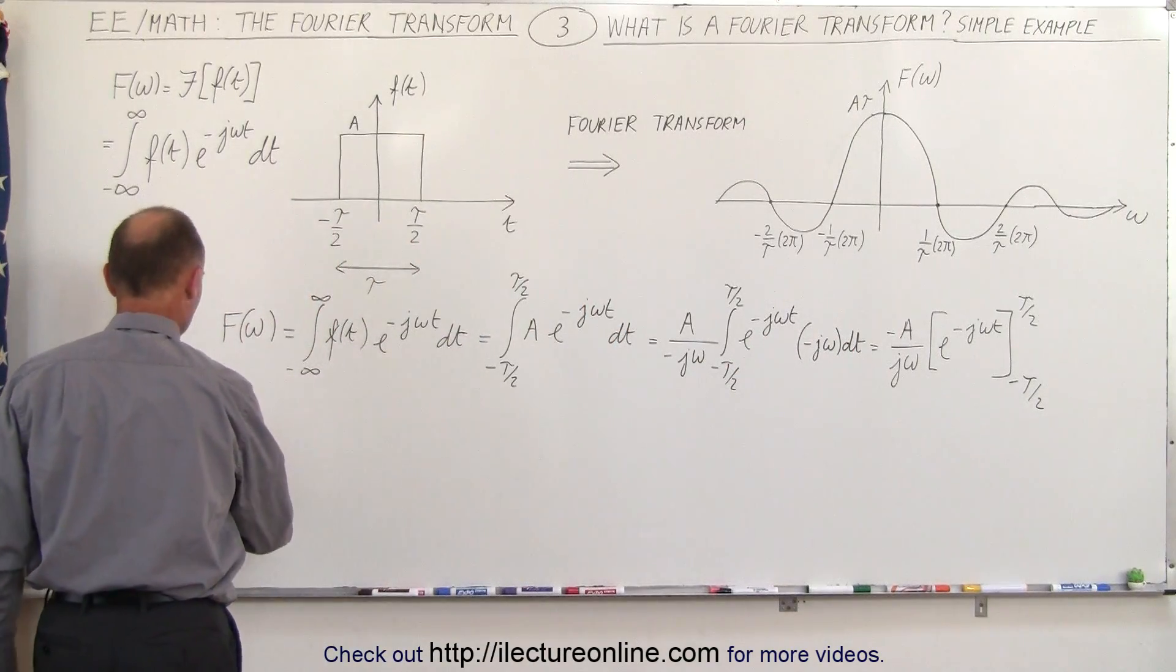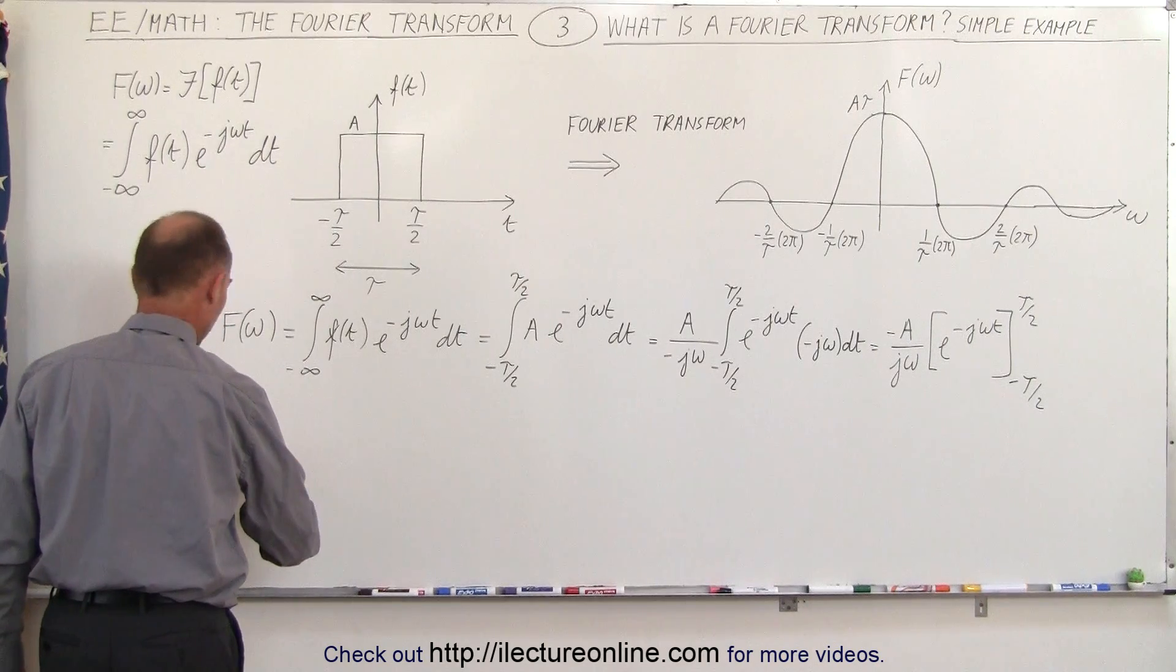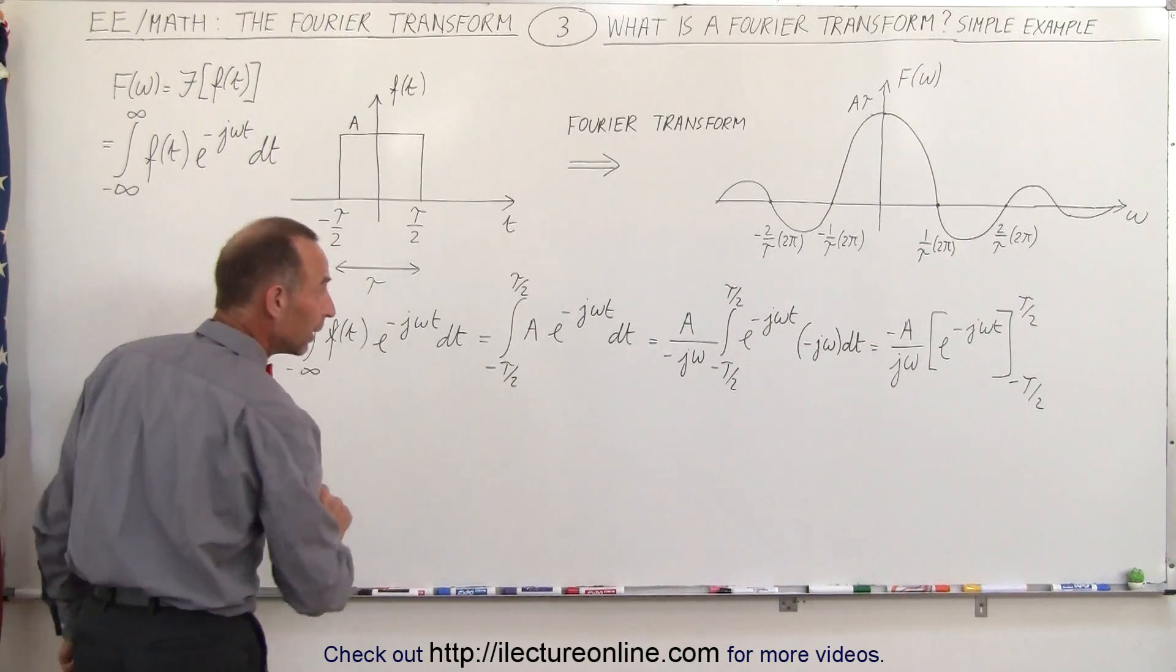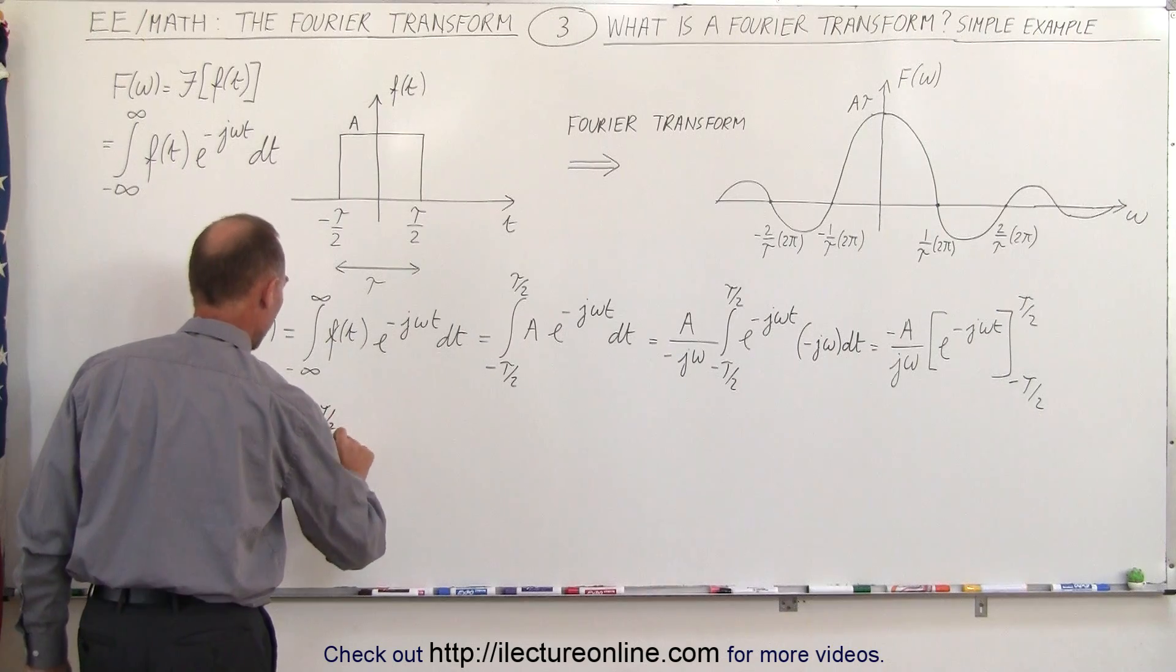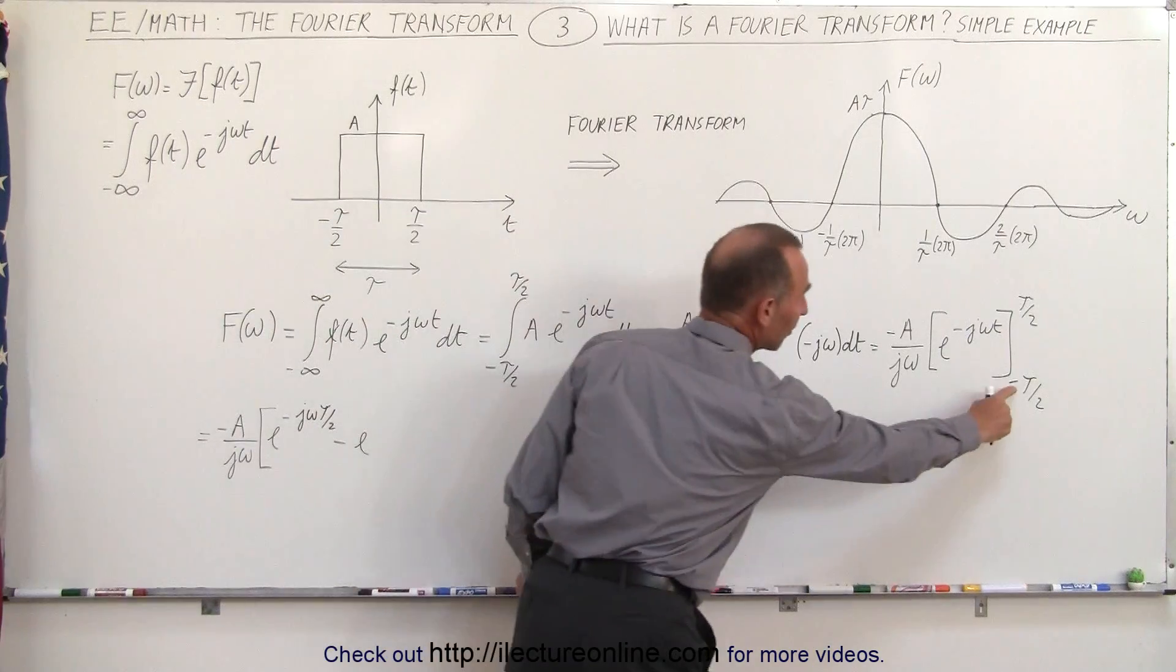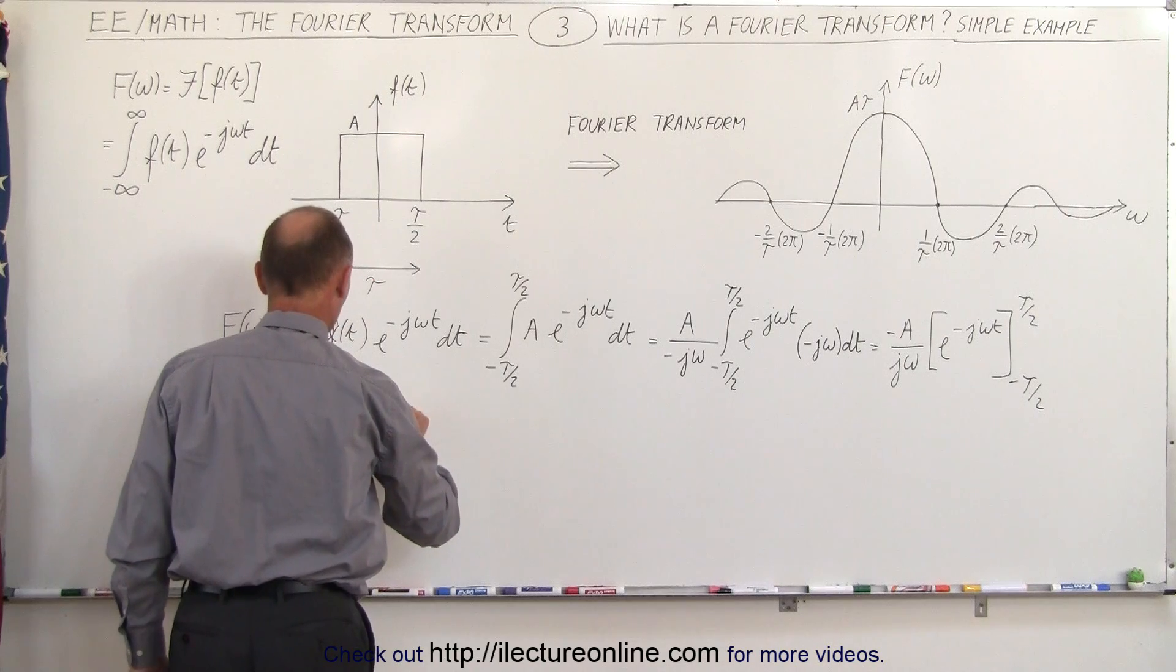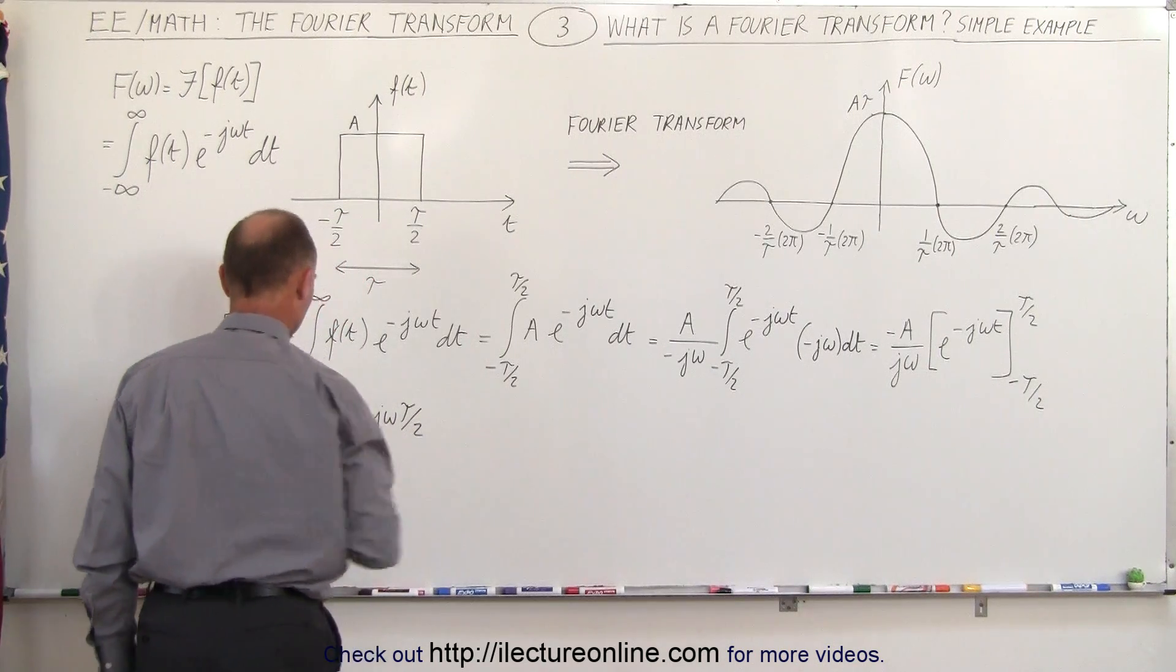So we end up with this is equal to minus A over j omega times, plug in the upper limit we get e to the minus j omega tau over 2 minus when we plug in the lower limit and that would be e. Notice that this minus when we plug it in will cancel out that minus we get e to the plus j omega tau over 2.